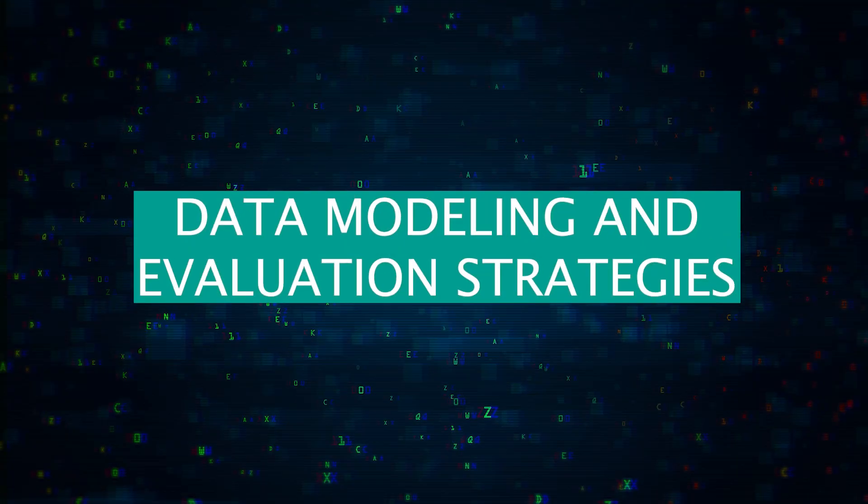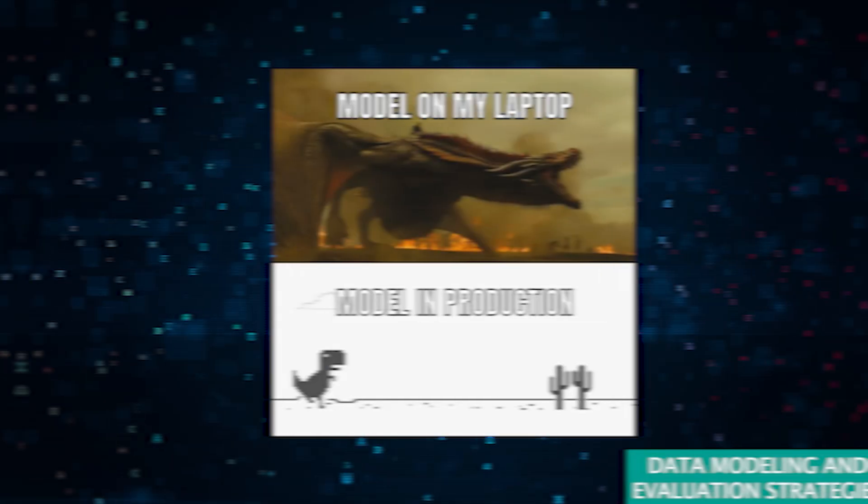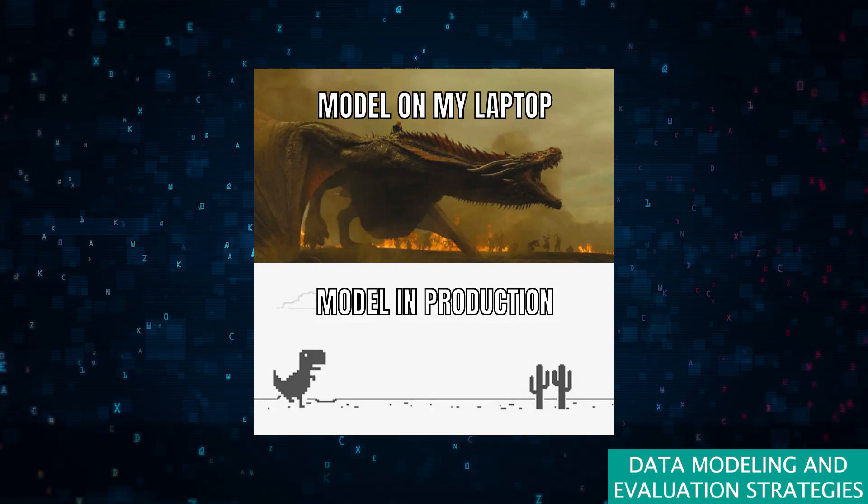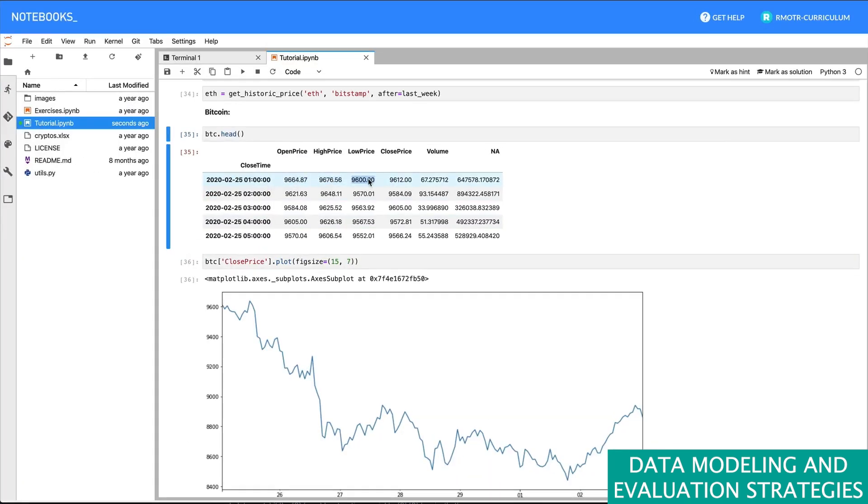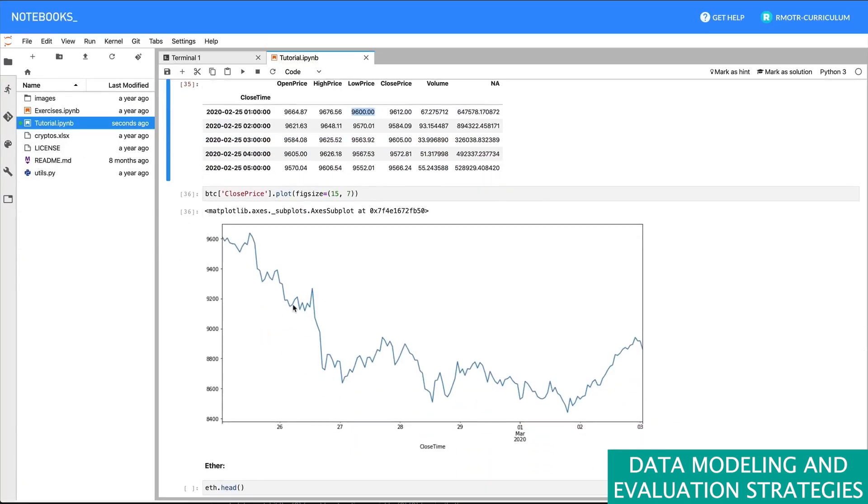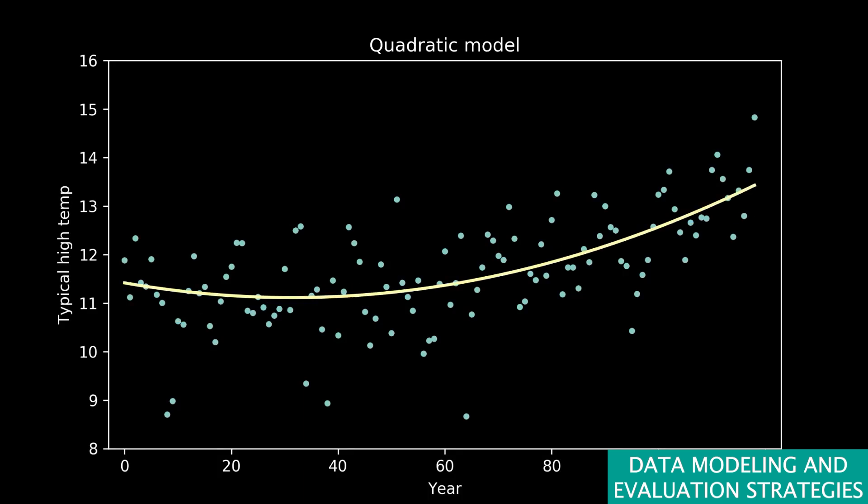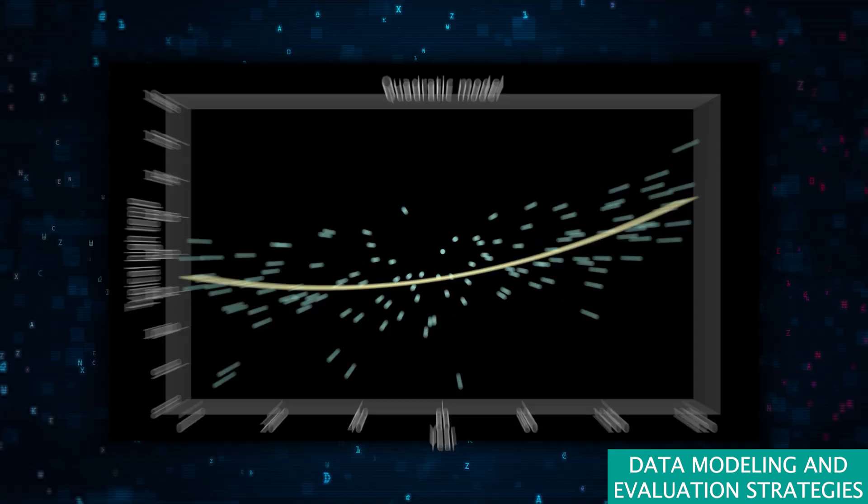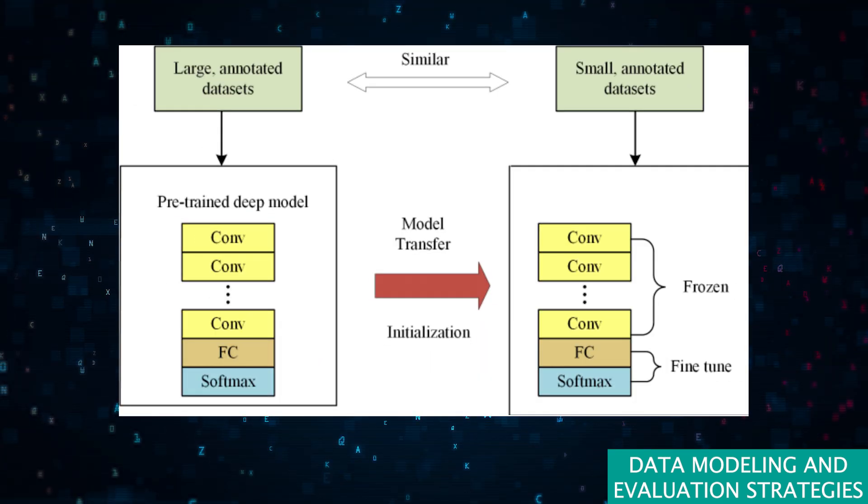A successful machine learning engineer doesn't just build models, they ensure these models are effective and reliable. This involves transforming raw data into a suitable format for analysis, selecting the right model for the problem at hand, and fine tuning model parameters for optimal performance.